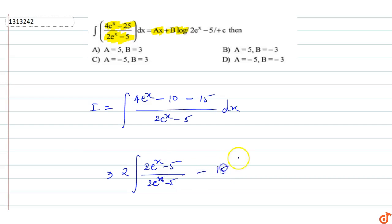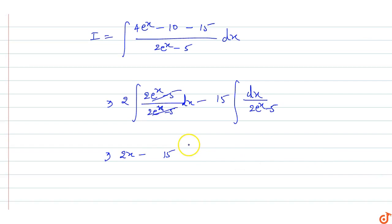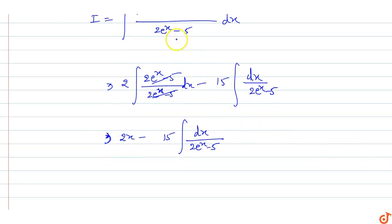This gives us the integral of 2 dx plus 15 times the integral of 1 upon (2eˣ - 5) dx. So here we get 2x plus 15 times integral of dx upon (2eˣ - 5).